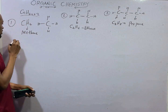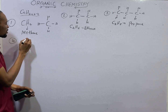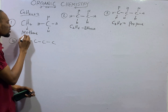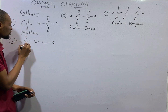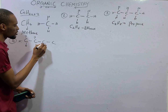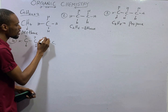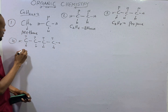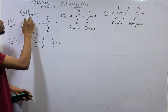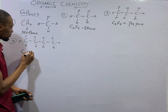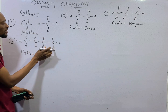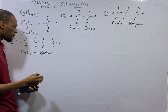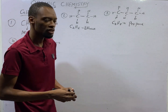The fourth member has 4 carbons. With all the hydrogens around it, that gives C4H10 — 2 times 4 is 8, plus 2 is 10. Counting confirms 10 hydrogens. This is butane. So the fourth member of the alkanes is butane.